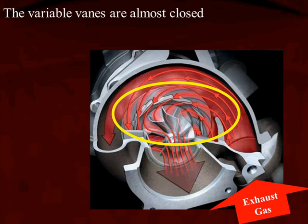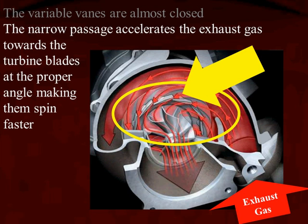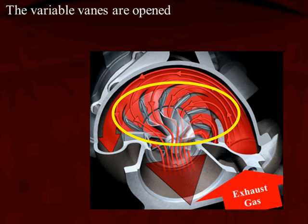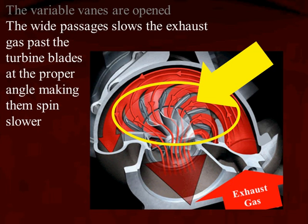Here's another photo where the variable vanes on this VGT turbocharger are almost closed. We can see there is a very small passage directing the exhaust gas, which accelerates it right toward the blades. As those vanes change position, the exhaust gas directed at those blades is PCM controlled so the computer controls exactly how much boost is created. The next photo shows the vanes wide open again, not directing exhaust gas at the blades, slowing them down.